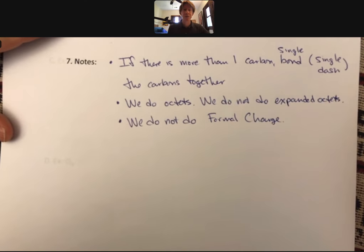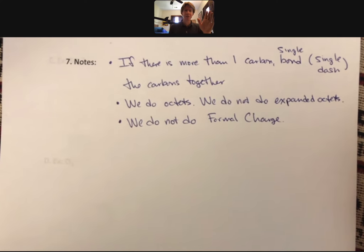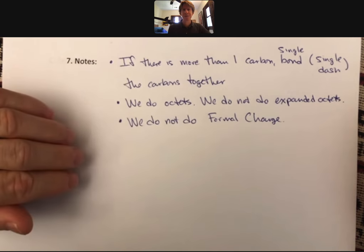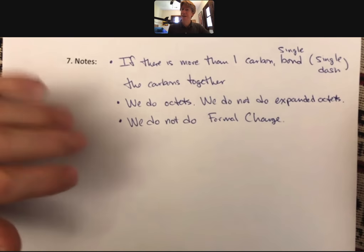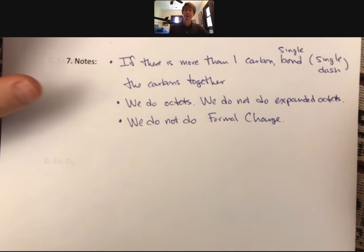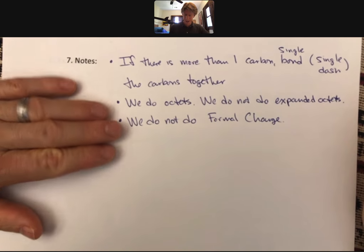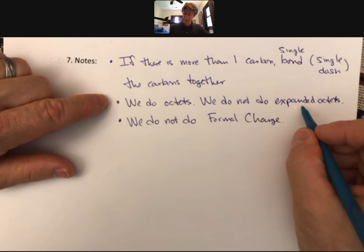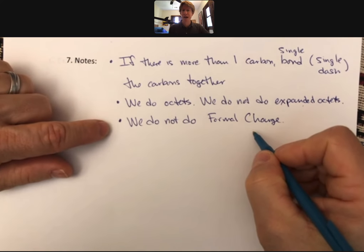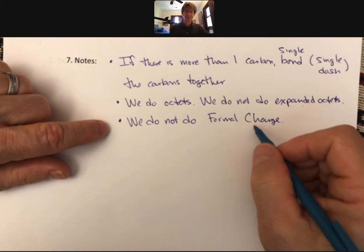And what else? Oh, we do not do formal charge. Again, you'll see formal charge, and that does change some things for Lewis structures. We are not doing it. We are just going to be happy if we can do, get octets for everybody. And you'll see this. And that's why I think it's really best if you pay attention to my method. And if you don't, that's okay. But you'll see when the homework that the answers are all keyed to, we do octets, but not expanded octets, and we do not do formal charge.